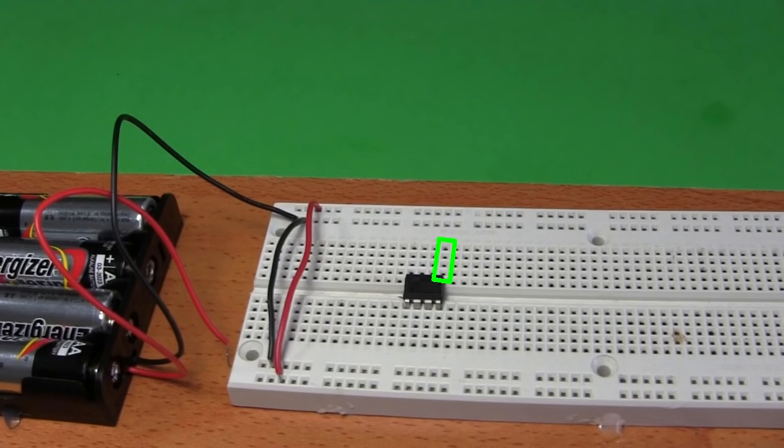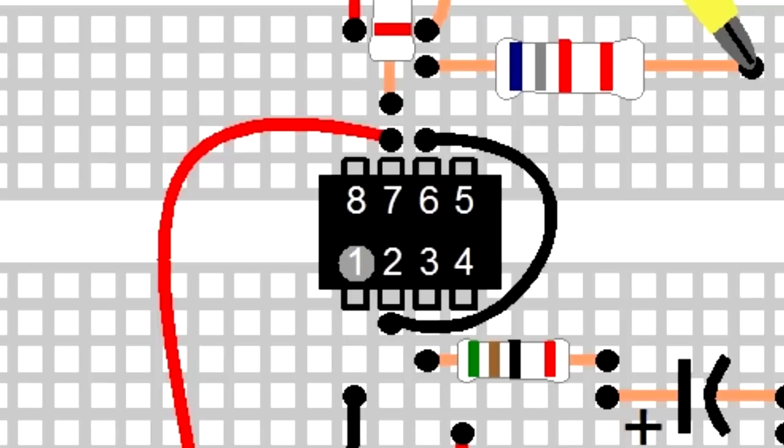Looking at the chip from the top, as I said, since the dot is here this is pin one, this is pin two, and so on up to pin eight.